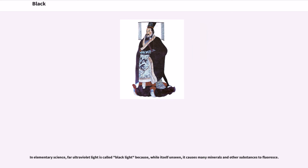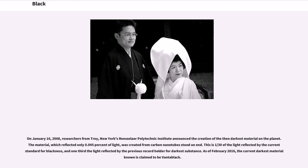In elementary science, far ultraviolet light is called black light because, while itself unseen, it causes many minerals and other substances to fluoresce. On January 16, 2008, researchers from Rensselaer Polytechnic Institute announced the creation of the then-darkest material on the planet. The material, which reflected only 0.045% of light, was created from carbon nanotubes stood on end. This is 1/30th the light reflected by the current standard for blackness. As of February 2016, the current darkest material known is claimed to be Vantablack.